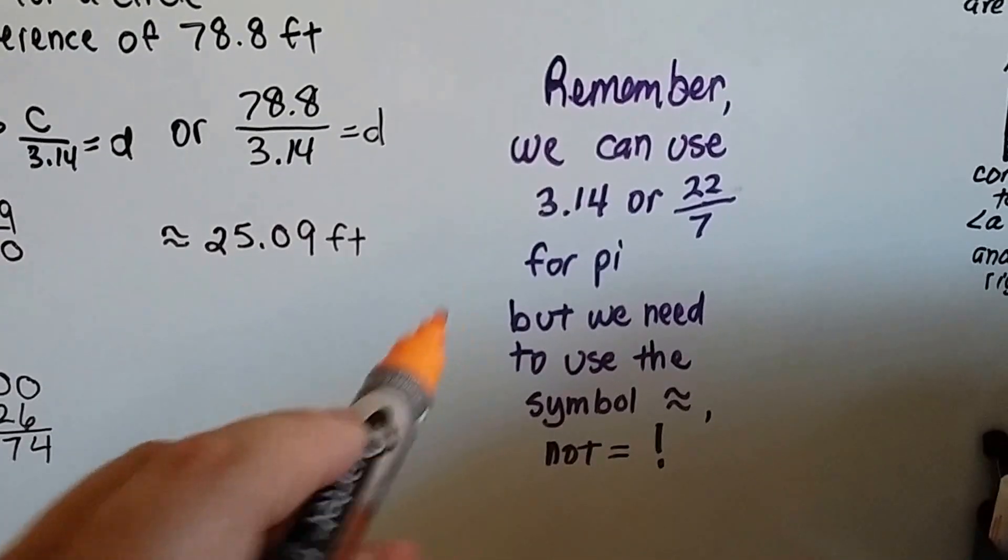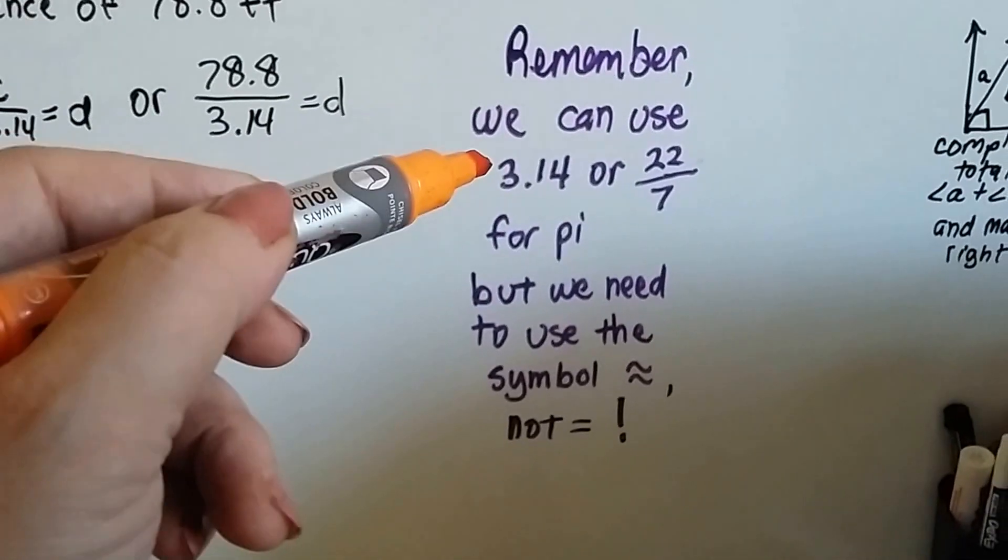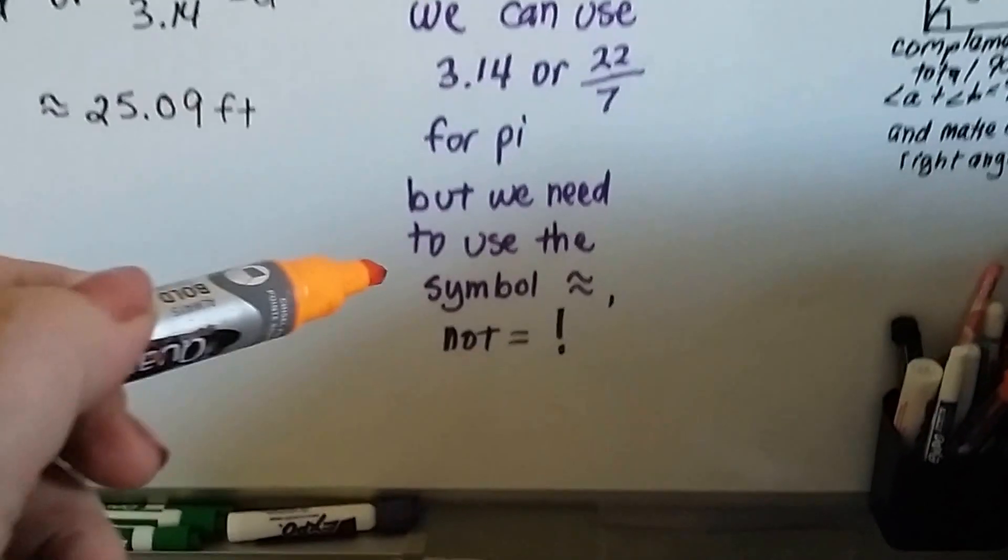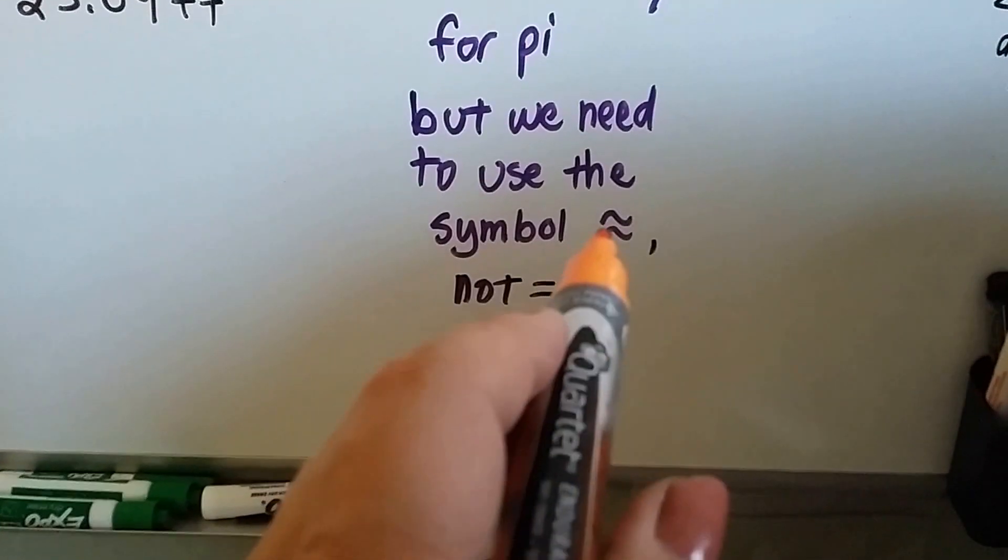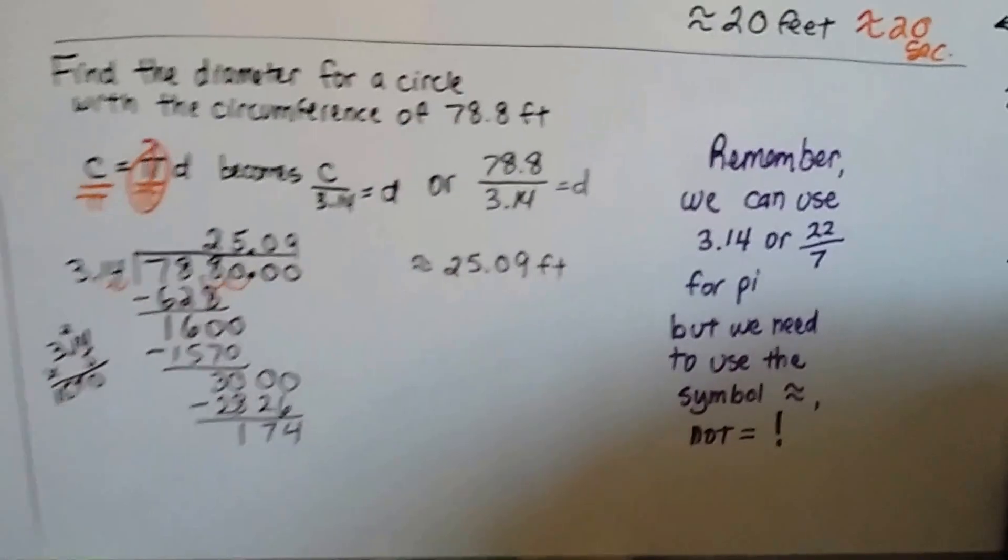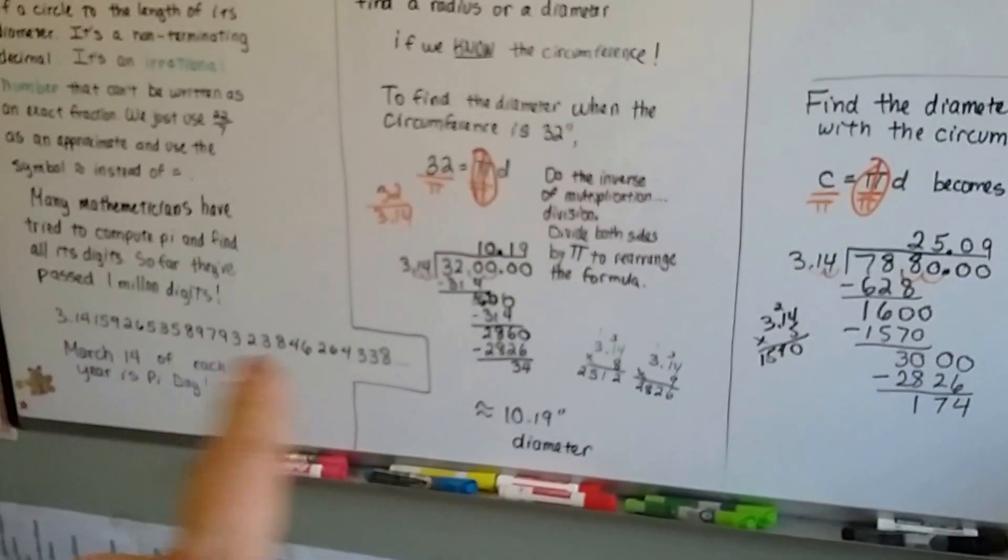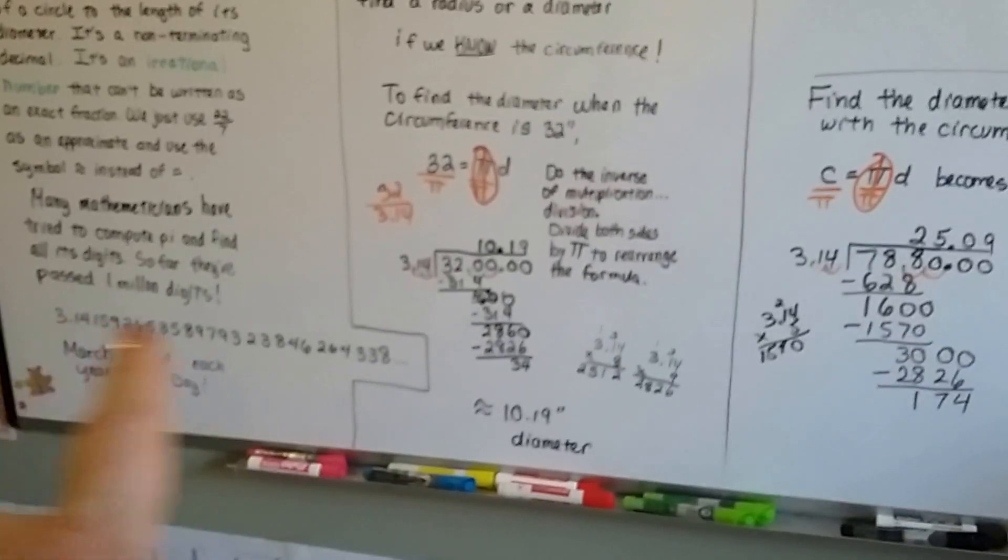Remember, we can use 3.14 or 22 sevenths for pi if we're using a decimal or a fraction. But we need to use the symbol approximately, not an equal sign. If you use an equal sign, you could get it marked wrong. It's got to be approximate because we're not multiplying or dividing by this really long number that pi represents.